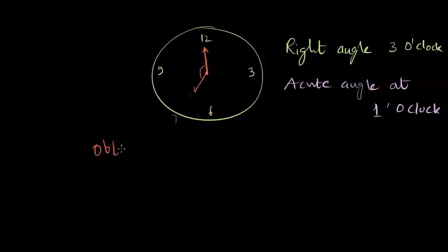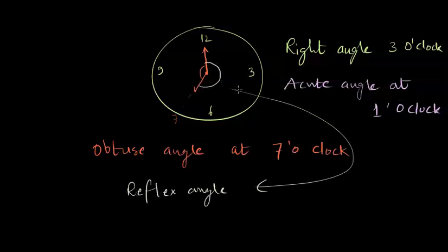If I draw a reflex angle like this, so this is a reflex angle which is greater than the straight angle, and you can find it opposite to an obtuse angle.